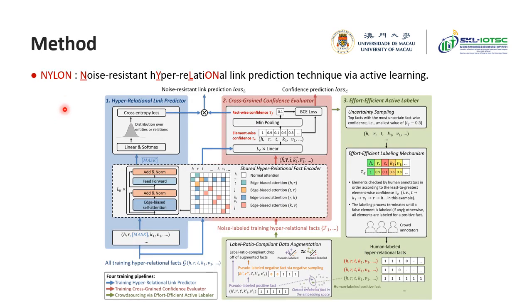To tackle this issue, we propose Naylan, a noise-resistant hyper-relational link prediction technique via active learning, which is, to the best of our knowledge, the first work to address this issue.